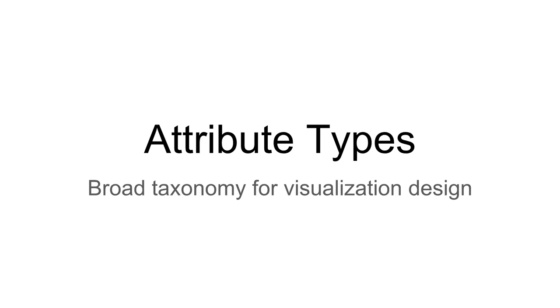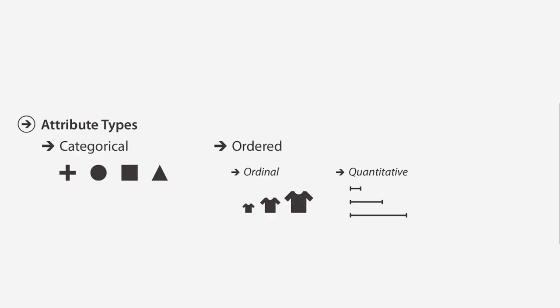Within tabular data, there are a couple of attribute types that provide a broad taxonomy for visualization design. These are categorical and ordered, and within ordered there's ordinal and quantitative. By the way, here, attribute is the same concept as a column of a table.